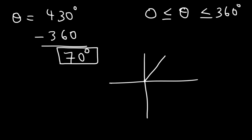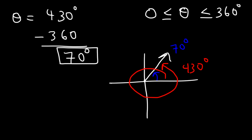So here is 70 degrees — it's right there. 430 degrees goes 90, 180, 270, 360, 430. As you can see, they end up in the same location.